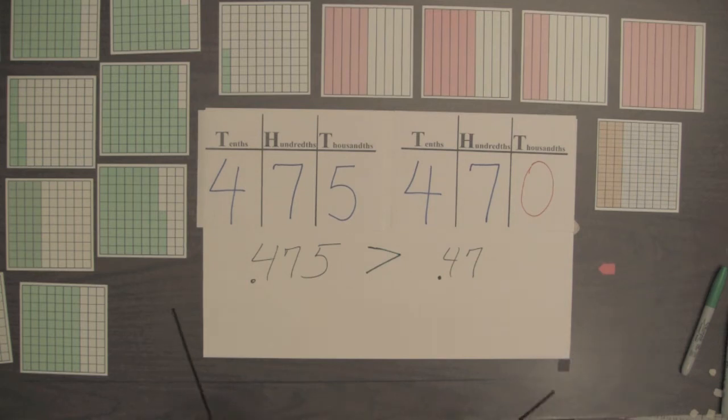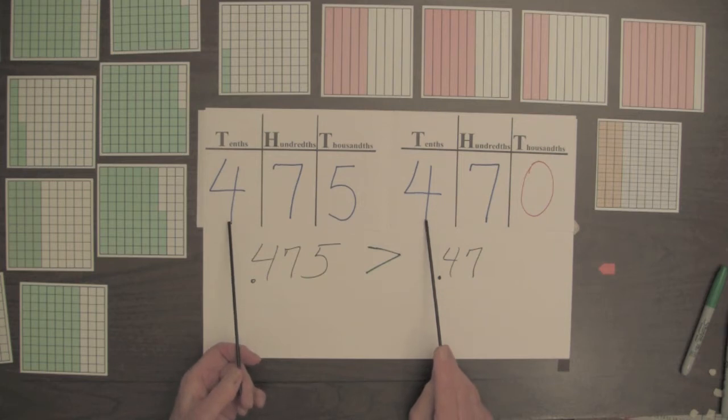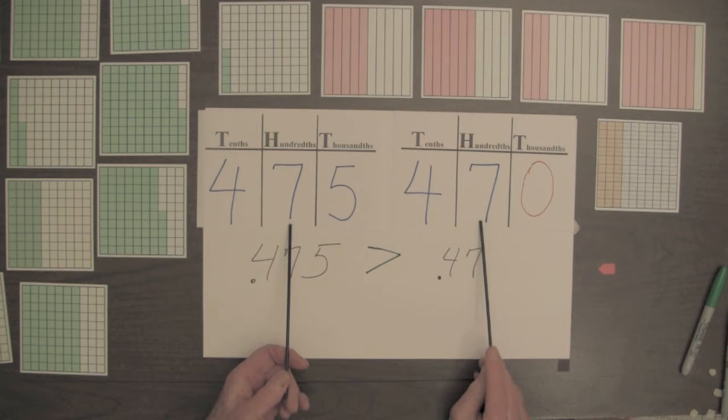So to determine an inequality for two decimals, we first check the tenths digits. If they're equal, we then check the hundredths digits. If they're equal, we then check the thousandths digits, and so forth.